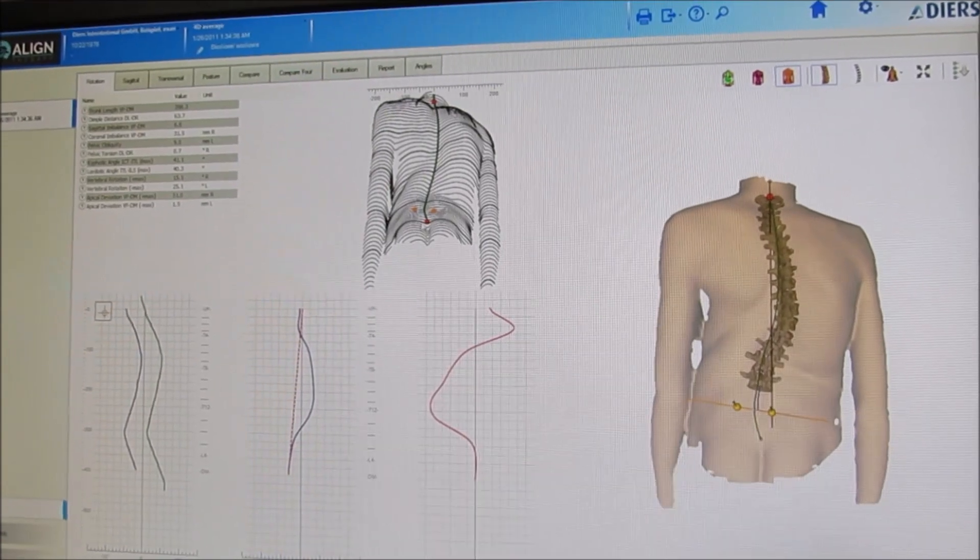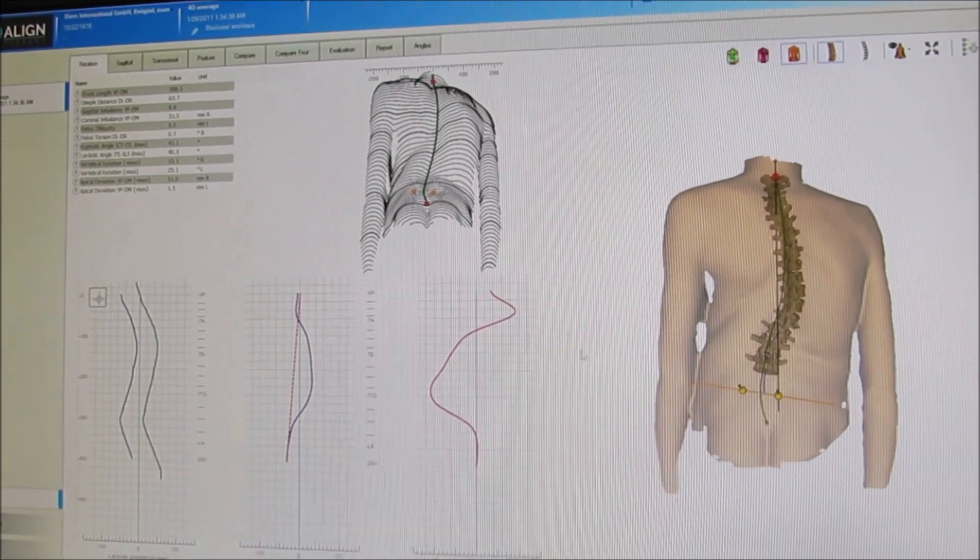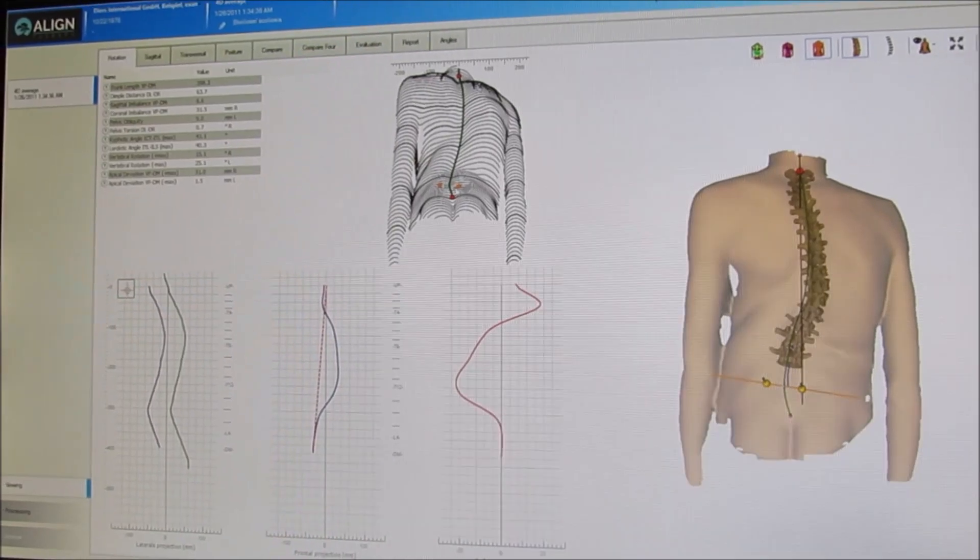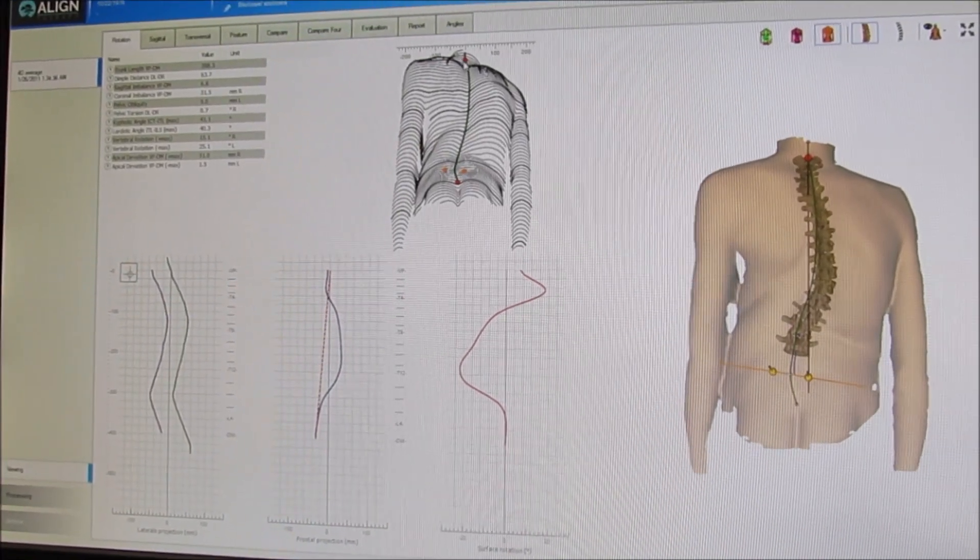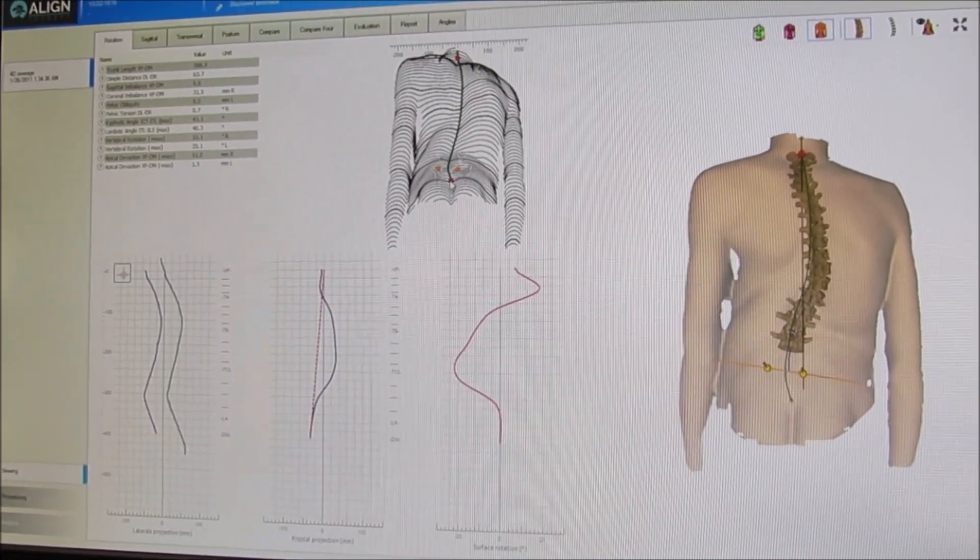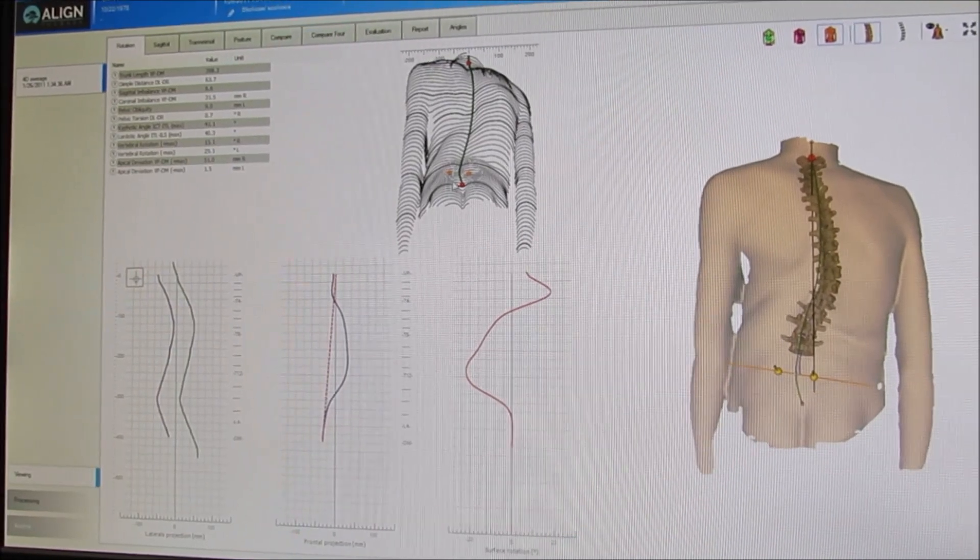So it finds a couple of spots here at the base near the pelvis, finds one in the neck, and then one down at the base of the sacrum.